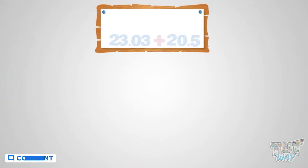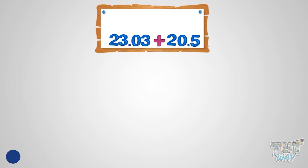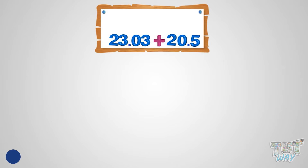Here we have two decimal numbers: 23.03 and 20.5. Now let's learn how to add them.